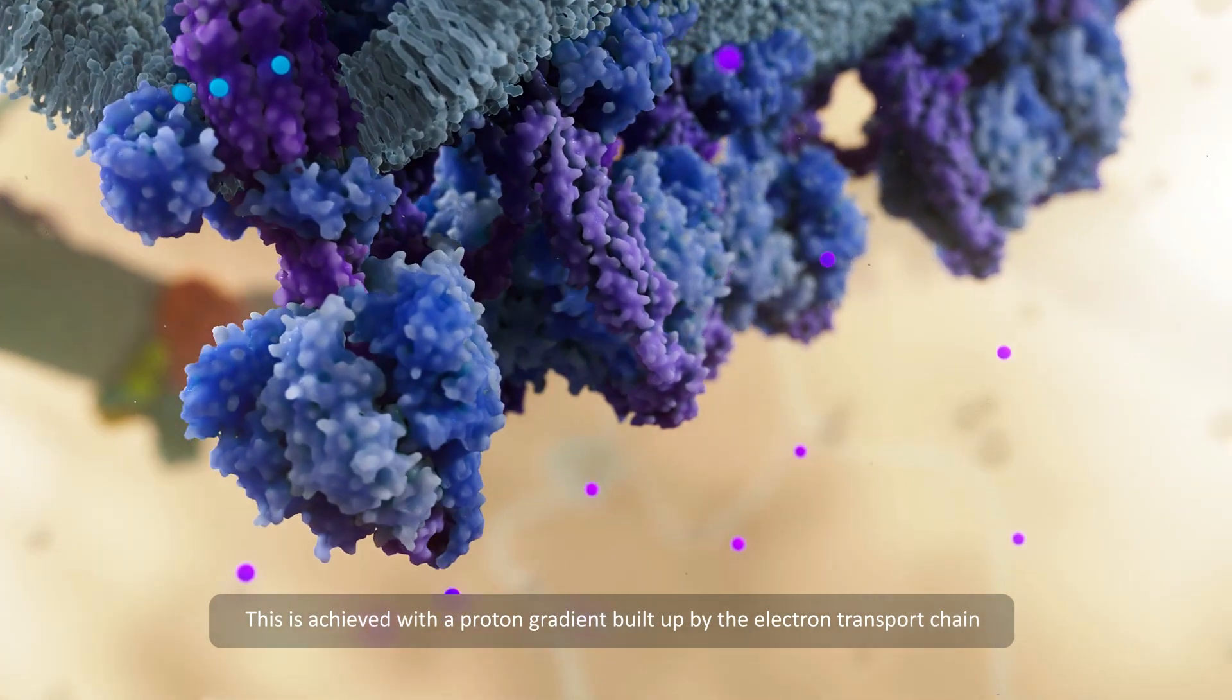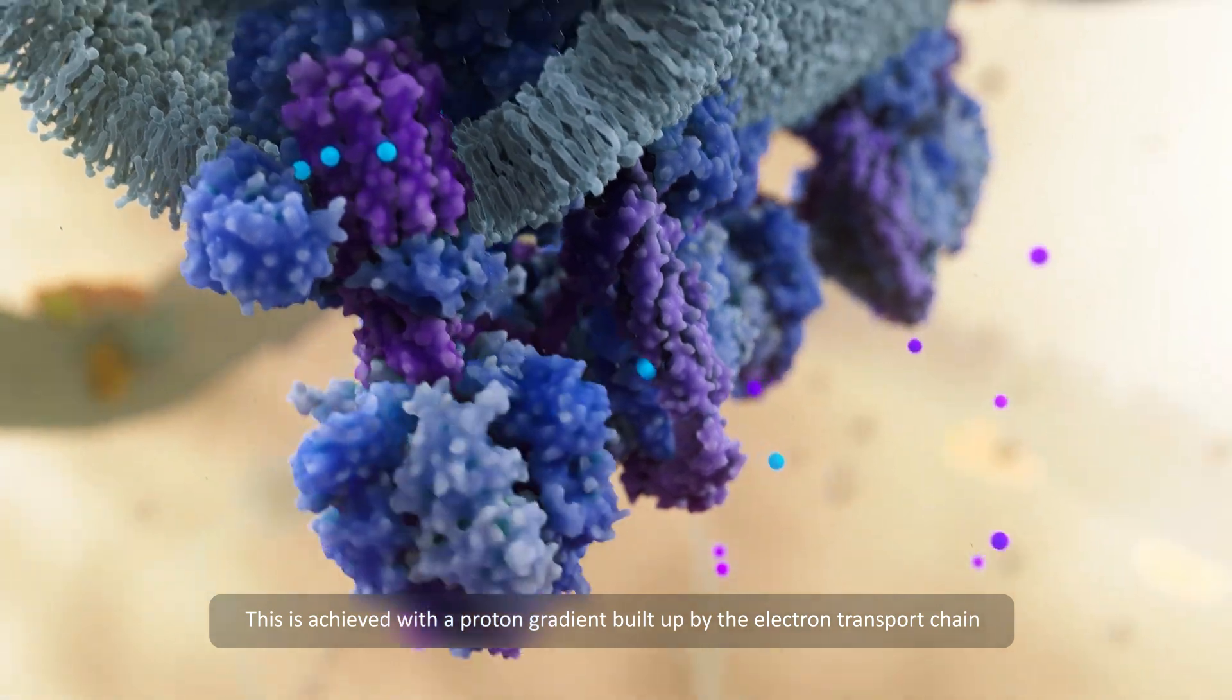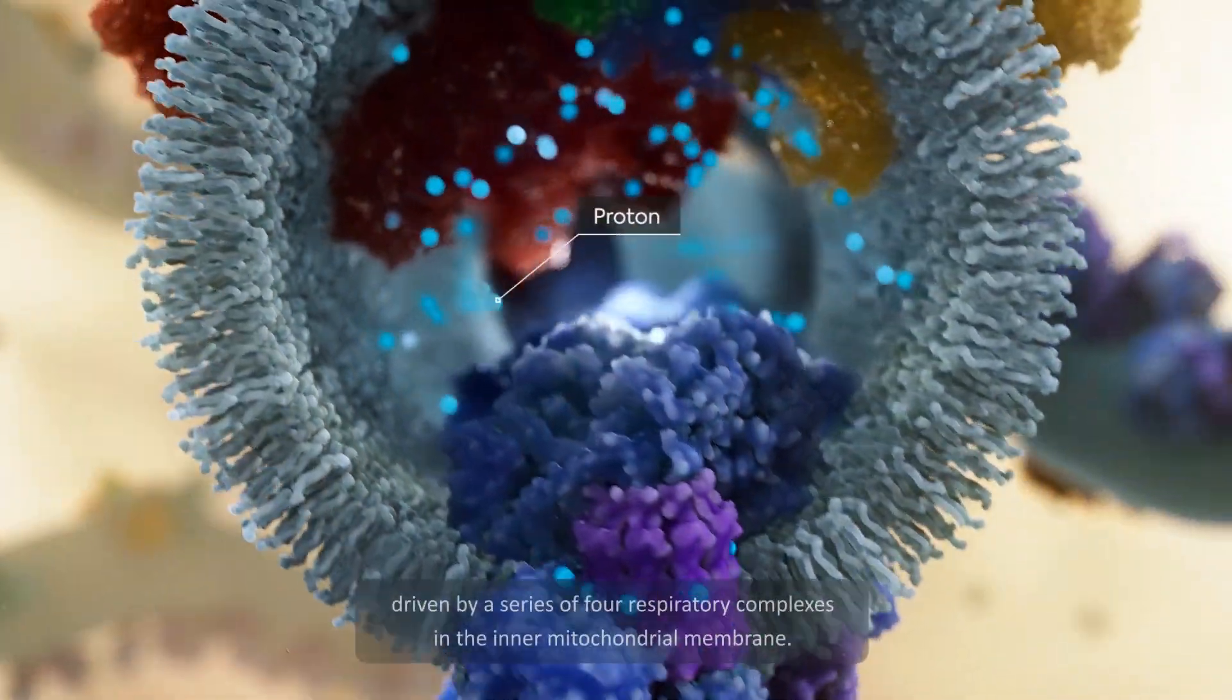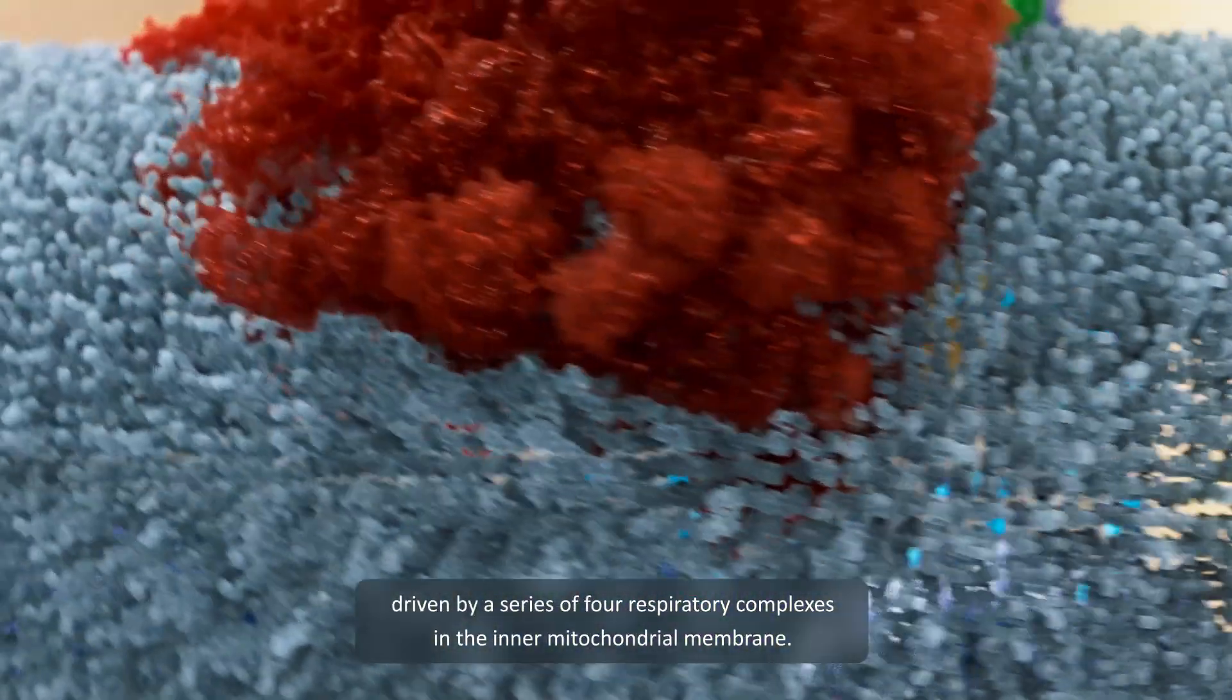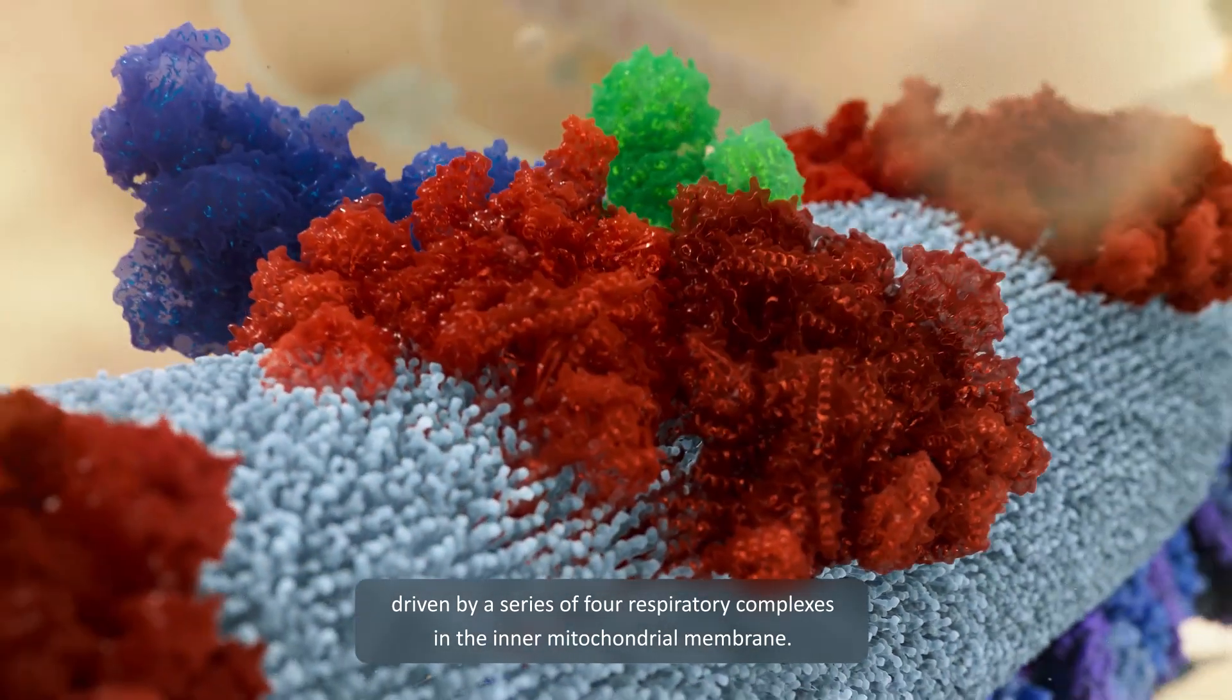This is achieved with a proton gradient built up by the electron transport chain, driven by a series of four respiratory complexes in the inner mitochondrial membrane.